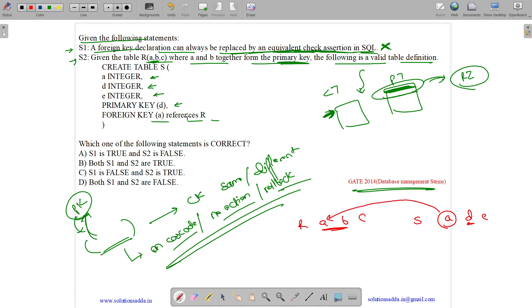But here it is given. This is false. Why is it false? Because here AB is our primary key.